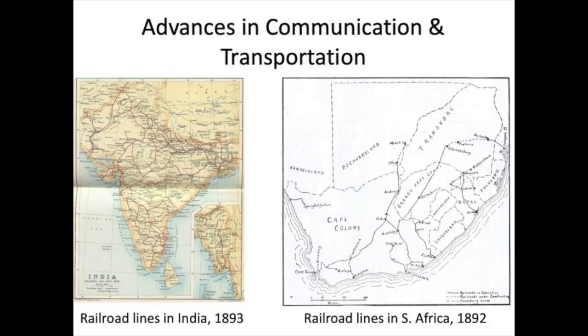Transportation between cities used an older technology — steam-powered trains. But the advent of cheaper steel, because of the Bessemer process, greatly increased the networks of railroads.